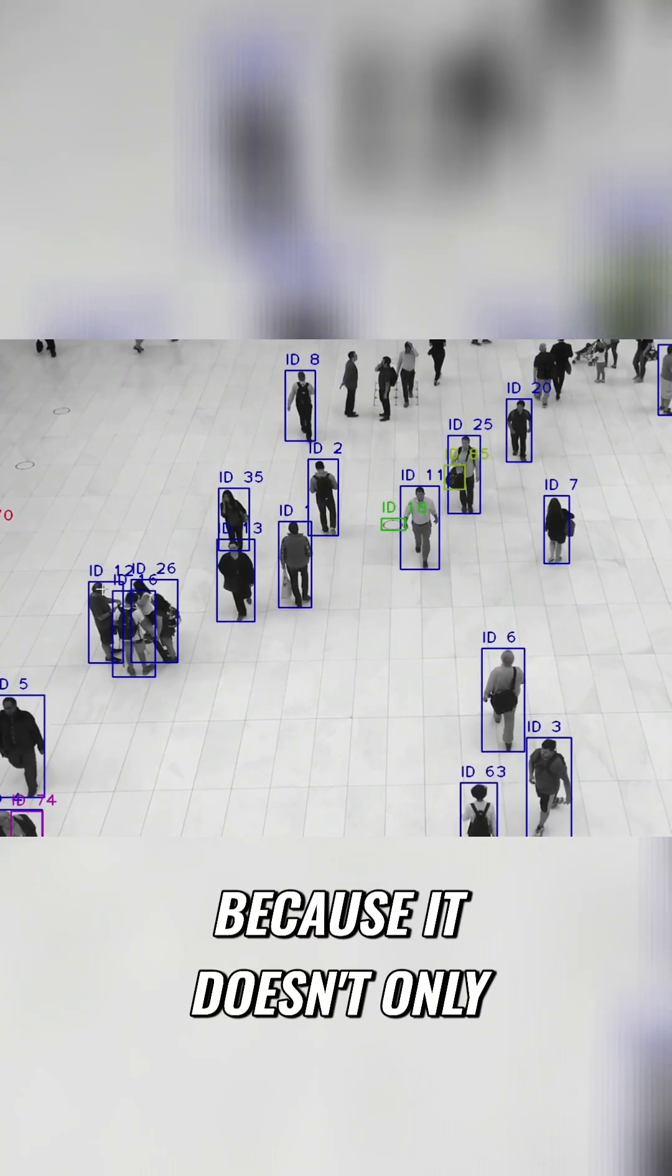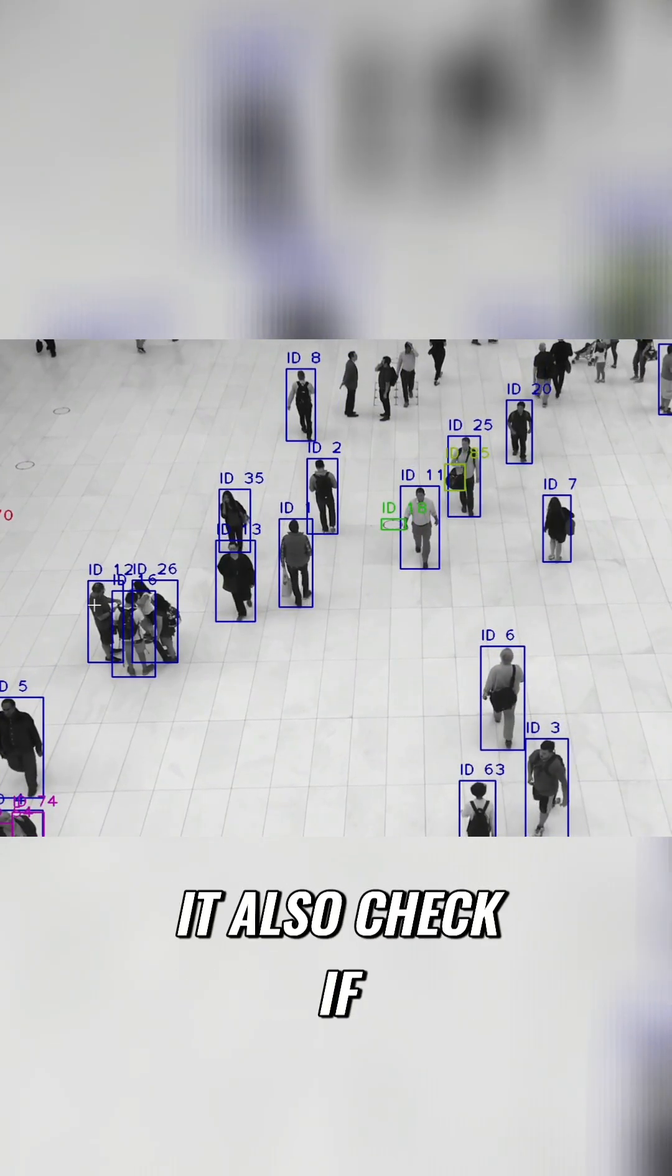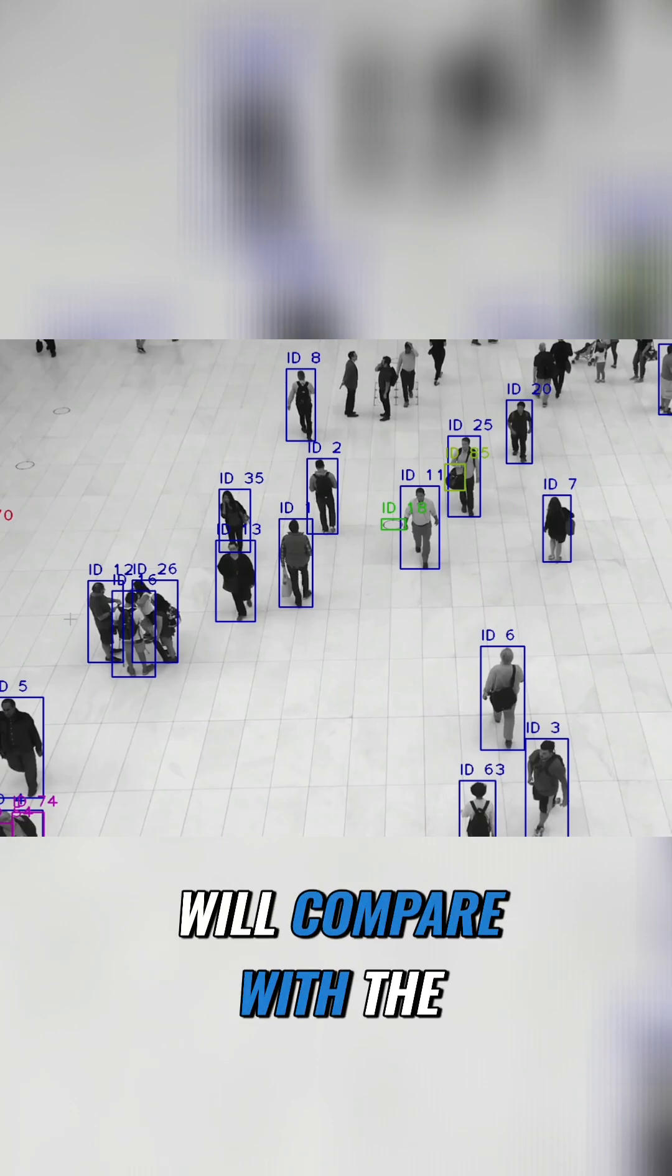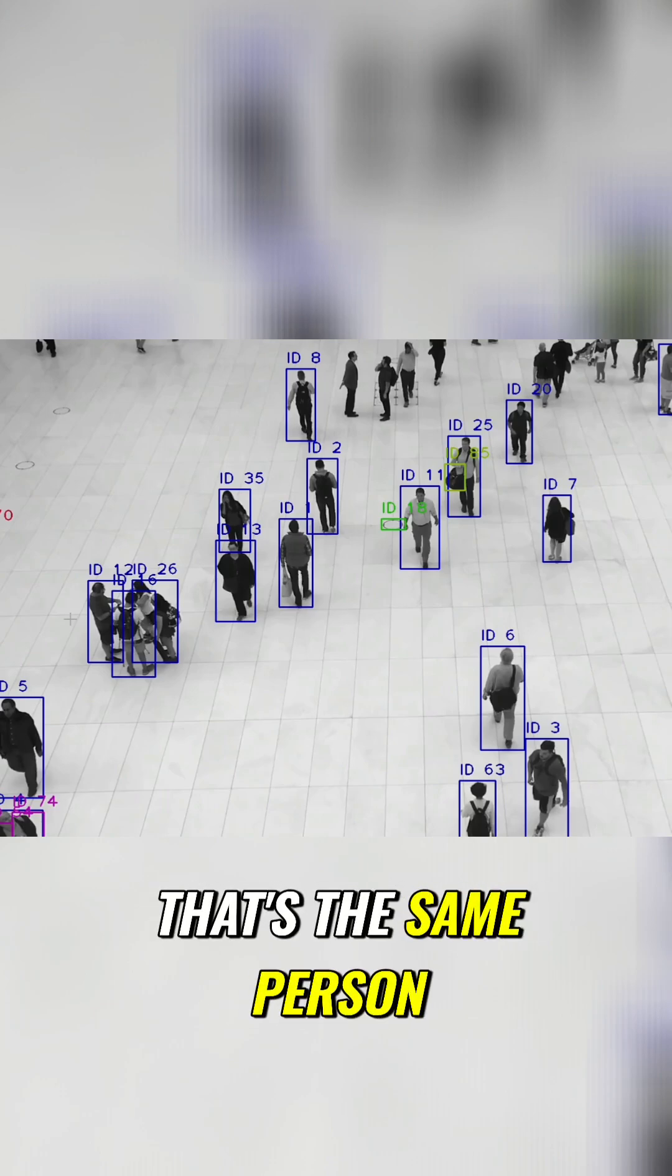Because it doesn't only check the location, but it also checks if it's similar. So it will crop the rectangle of the person and compare with the new possible position. That's the same person.